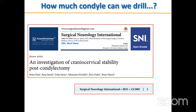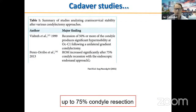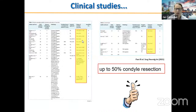How much condyle can we drill during surgery? A review investigating cranioservical stability after condylectomy found in cadaver studies that up to 75% of the condyle may be resected without significant instability. In clinical studies, the degree of resection varies between 30% and 50% — somewhat below the cadaver studies. So stability is somewhere in this range.